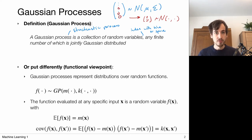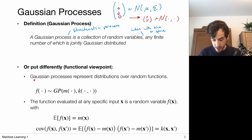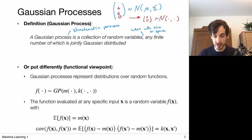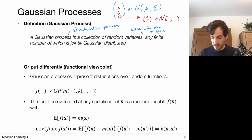I prefer to adopt the functional viewpoint, which represents the same definition. What is typically done is to think of Gaussian processes as a distribution over random functions. Just like the normal distribution returns a vector, a Gaussian process is a distribution that returns a random function, which can be sampled at a particular point x on which the function is defined.